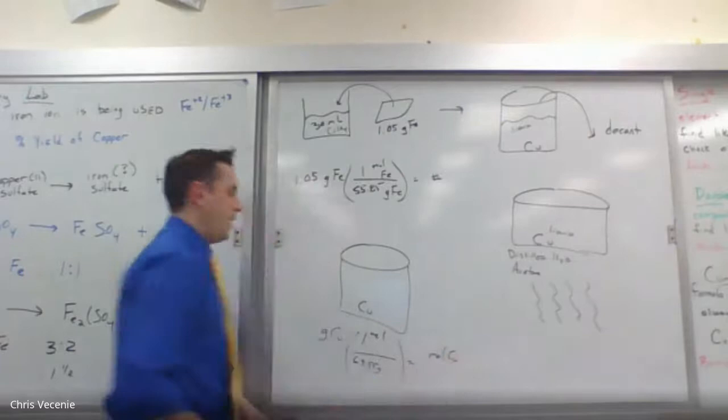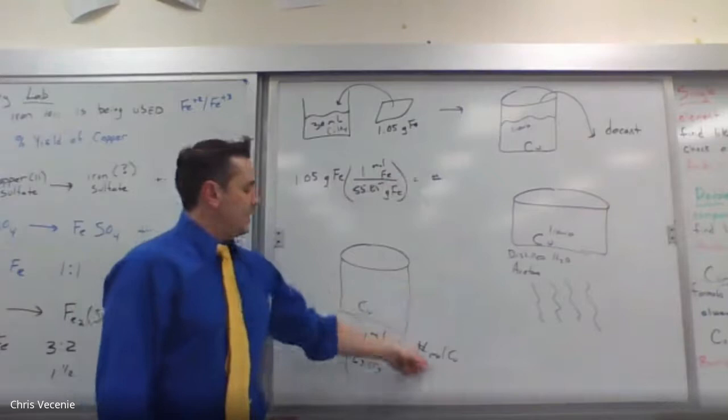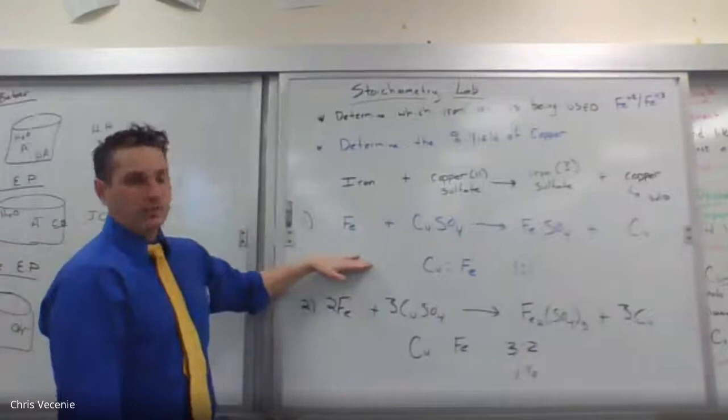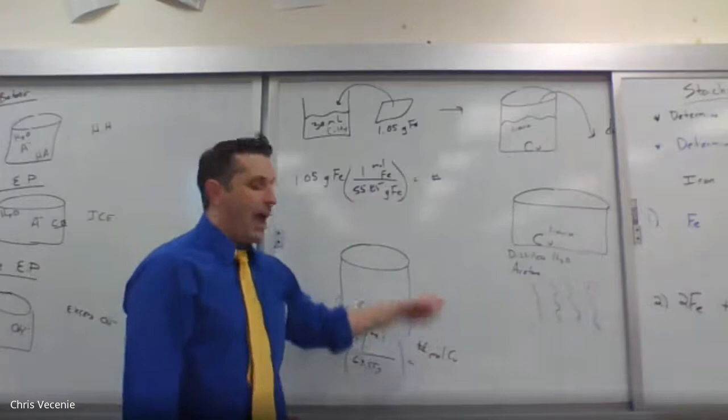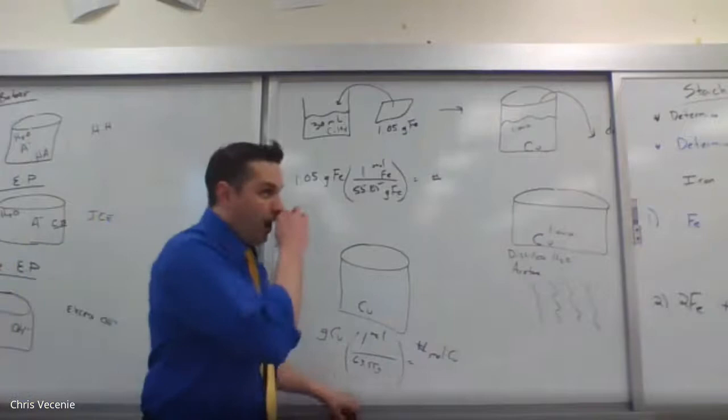Now that you have both numbers — moles of Fe and moles of Cu — you can see: is it a 1:1 ratio pointing to the blue equation (Fe²⁺), or is it a 3:2 (1.5:1) ratio pointing to the black equation (Fe³⁺)? Let me take you to the back and show you how this works.